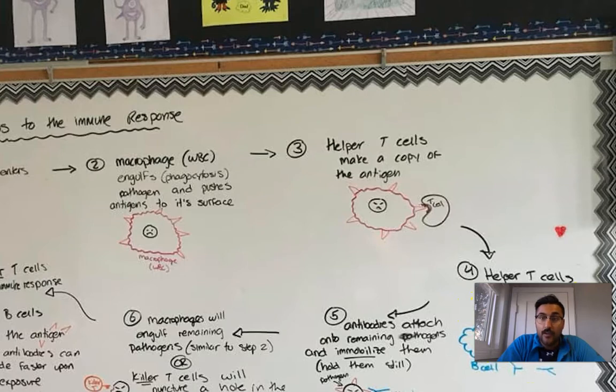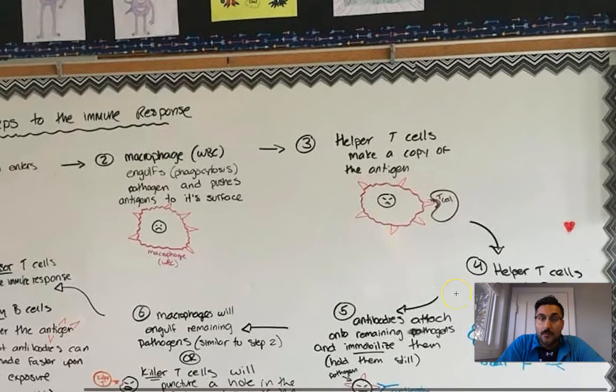And remember antibodies, this is step number four here, antibodies are specific for every antigen. And so these B cells are making antibodies, these Y shaped structures, which are only going to fit these triangle shaped antigens.